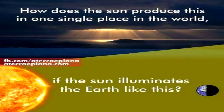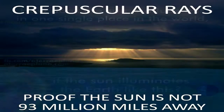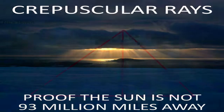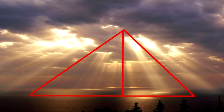Eratosthenes' calculations were made assuming the sun to be millions of miles away, so that its rays would fall perfectly parallel, even in points as divergent as Sien and Alexandria. Anyone familiar with the phenomenon known as crepuscular rays, however, knows full well that the sun's rays simply do not fall perfectly parallel, especially at such distant points, rendering the entire argument moot.